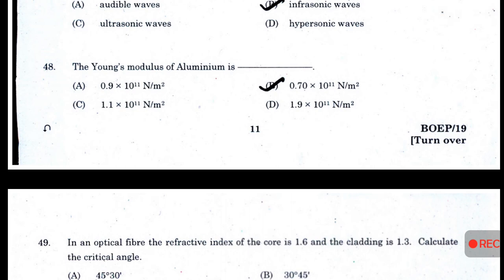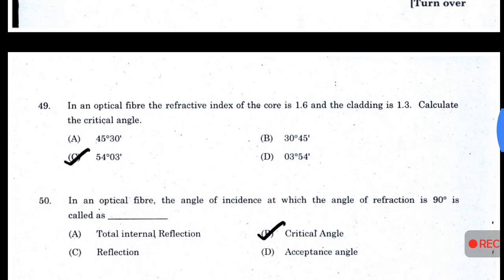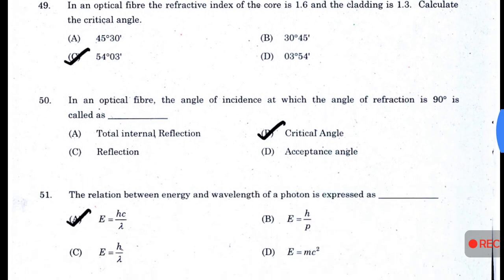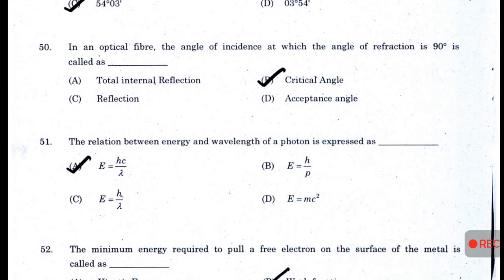The Young's modulus of aluminium is 0.70 × 10¹¹ N/m². In an optical fiber, the refractive index of the core is 1.6 and the cladding is 1.3 — answer B. Calculate the critical angle: 54 degrees. In an optical fiber, the angle of incidence at which the angle of refraction is 90 degrees is called — answer B — the critical angle.